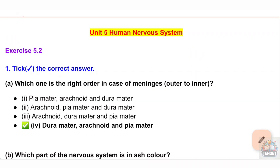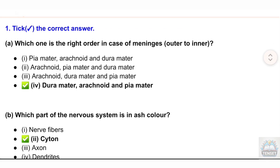Unit 5, Human Nervous System, Exercise 5.2. Question 1: Tick the correct answer. (a) Which one is the right order of meninges from outer to inner? (i) Pia mater, arachnoid and dura mater; (ii) Arachnoid, pia mater and dura mater; (iii) Arachnoid, dura mater and pia mater; (iv) Dura mater, arachnoid and pia mater.